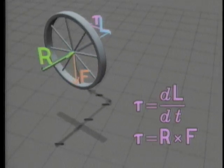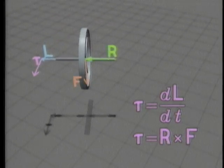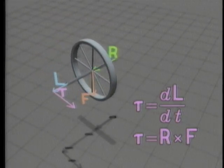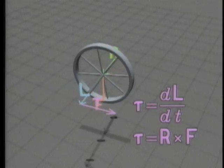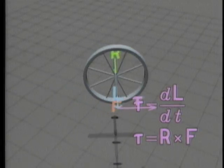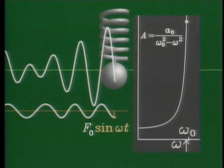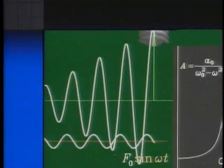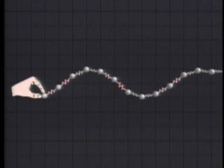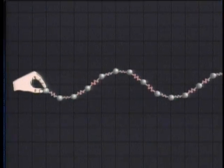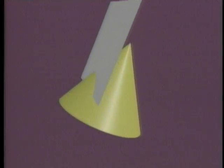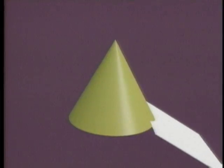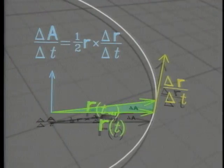The basic laws of mechanics are then used to illustrate such questions as precession of gyroscopes, resonance, wave motion, and ultimately Kepler's law of conic sections and the equal area law.